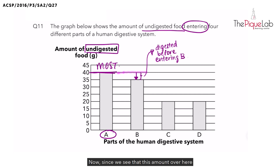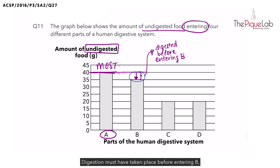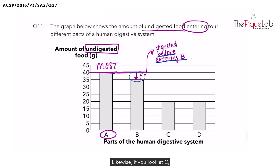Now since we said that this amount over here has been digested before entering part B, where do you think this digestion must have taken place? Digestion must have taken place before entering B, which is most likely at part A.